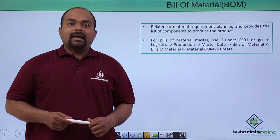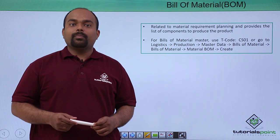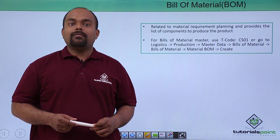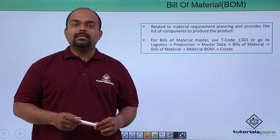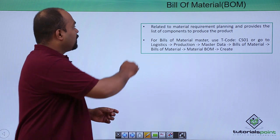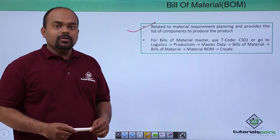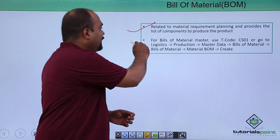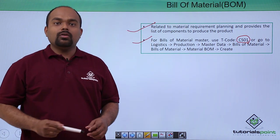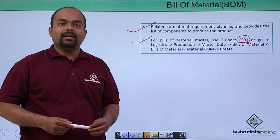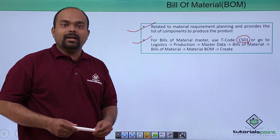Related to the product or finished goods, we provide detailed information about which type of material and what quantity of material is required in the bill of material. The transaction code we use for bill of material is CS01, and the path is shown here.